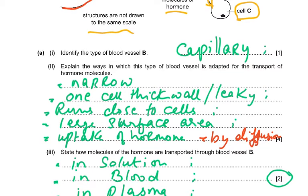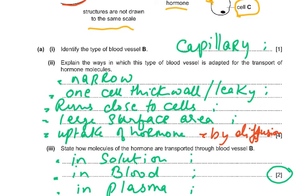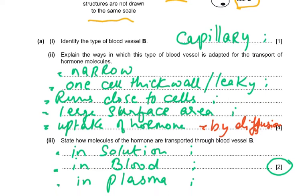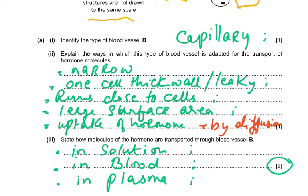So blood vessel B is a capillary. Explain how this type of blood vessel is adapted for the transport of hormone molecules: (1) they are narrow; (2) they are one cell thick; (3) they have pores so substances can move out; and (4) they have a large surface area, running very close to body cells, allowing uptake of the hormone by diffusion. These are the four key mark scheme points.